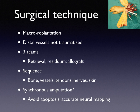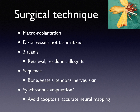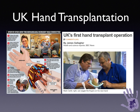The surgical technique is relatively straightforward — it is a macro-replantation where the distal vessels are not traumatised. Three teams are usually involved: one for retrieval, one for working on the residuum, and one for working on the allograft. Typically, as in any macro-replantation, the sequence is bones and vessels, followed by tendons, nerves, and skin. Simon Kaye has reported on synchronous amputation — amputating a non-functioning hand at the same time as reattaching the transplanted limb — which allows accurate mapping of neural topography and reduces the exponential decay in the proximal nerve stump that occurs through apoptosis after a long delay following amputation.